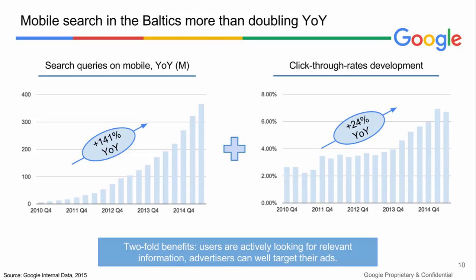Looking at more AdWords-related segments — search queries and ad click-through rates — we can see an even more impressive development. On average, in the last four years, search queries performed on mobile phones were more than doubling each year, and growth seems to continue. Additionally, the ad click-through rate development indicates that people are not disturbed by ads on their mobile phones, especially if they deliver relevant and timely content. If in 2010 the average click-through rate was just above 2%, by the end of 2014 it was already higher than 6% — a massive increase in such a short period of time.